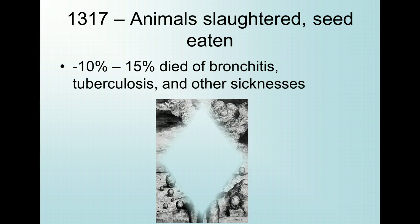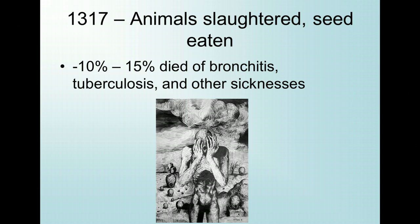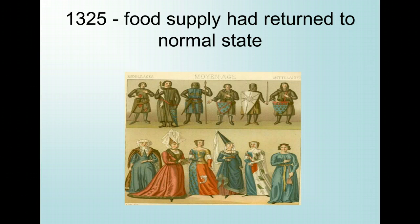Even so, many of the surviving people and animals were simply too weak to work effectively. About 10–15% of the population had died of pneumonia, bronchitis, tuberculosis, and other sicknesses that the starving sufferers' weakness had made fatal, and there were consequently fewer mouths to feed. It wasn't until about 1325 that the food supply had returned to a relatively normal state and the population began to increase again. Europeans were badly shaken; the death rate had been high, and even nobles and clergy had perished from hunger. The world now seemed a less stable and gentle place than it had been before the Great Famine.